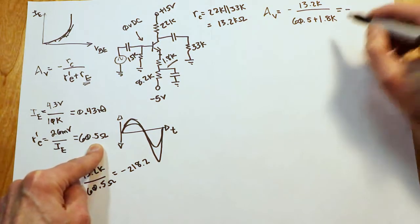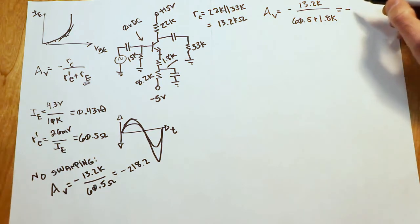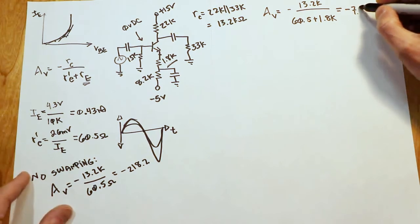Now, you can see what's happening here. This denominator is much, much larger than it used to be, and the gain is going to go way down. As a matter of fact, our gain is just a little bit over 7, it's about 7.1.